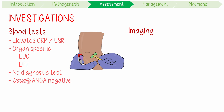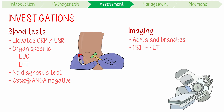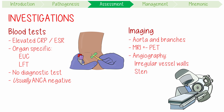Complete imaging of the aorta and its branches is essential, and may involve MRI and/or PET scans. Angiography has a characteristic pattern of irregular vessel walls, stenosis, and post-stenotic dilation in the form of aneurysms.